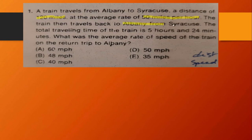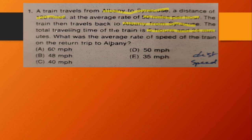The train then travels back to Albany from Syracuse. The total traveling time of the train is five hours and 24 minutes. What was the average rate of speed of the train on the return trip to Albany? The options are: A) 16 mph, B) 48 mph, C) 40 mph, D) 50 mph, E) 35 mph.